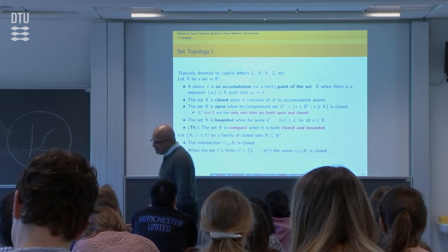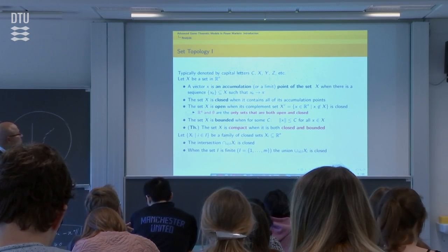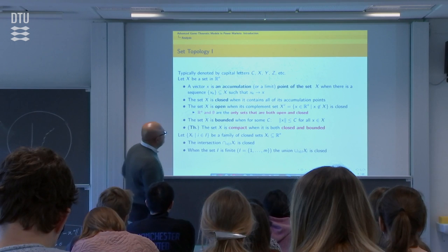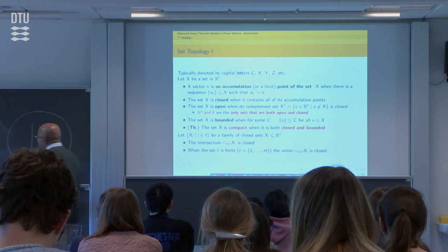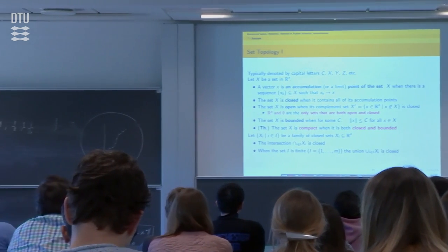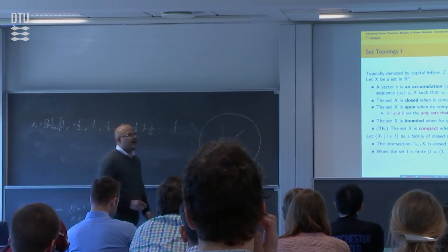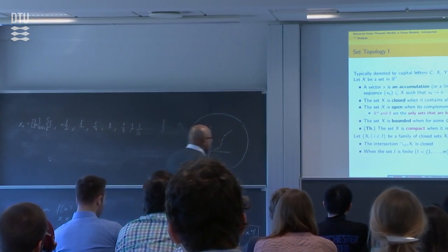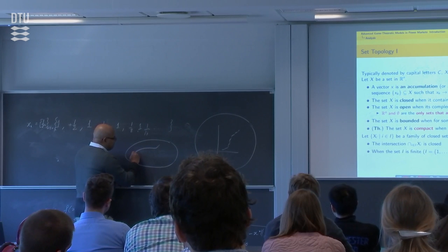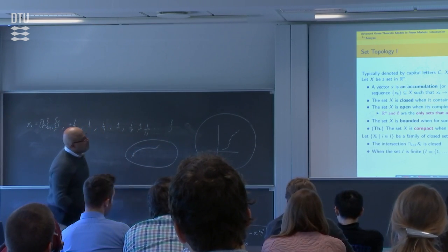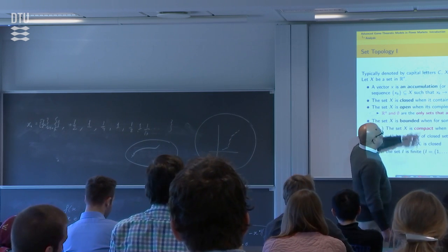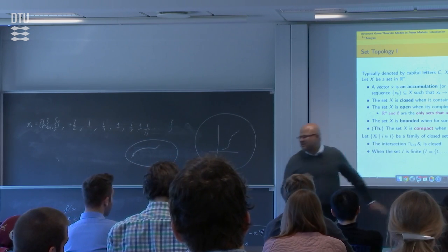Here is some set topology that we will find useful. A vector x is said to be an accumulation point of a set if there is a sequence x_k such that x_k tends to x. The set X is said to be closed if it contains all its limit points. A set X is open if its complement set is closed. Let me give some quick examples of closeness and openness.